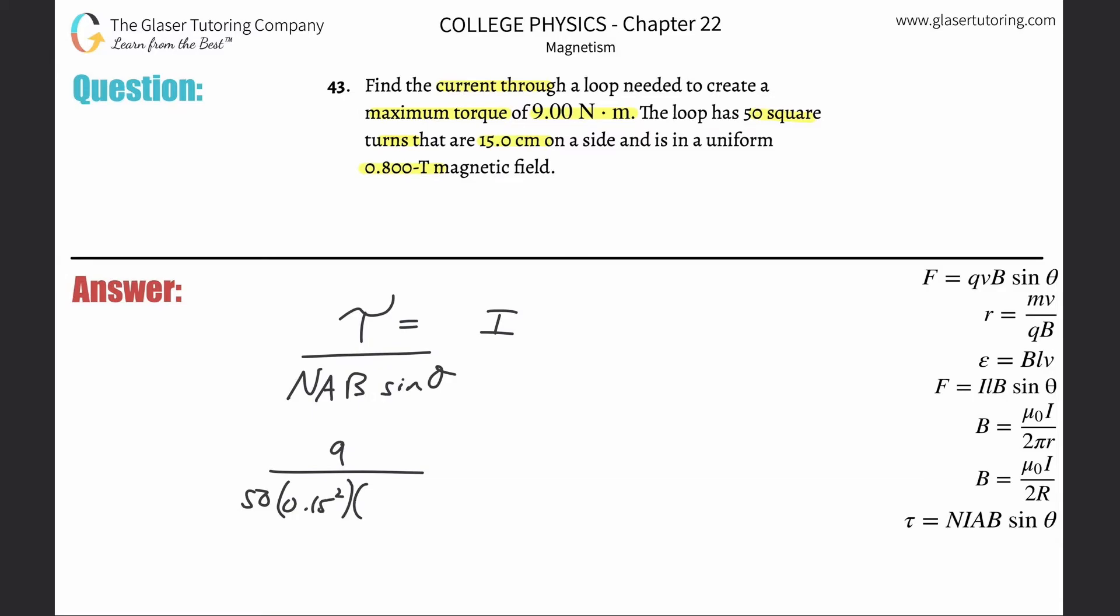The magnetic field is 0.8 tesla. Since we want maximum torque, the angle would be 90 degrees relative to the normal. What does that look like? Check out number 42.